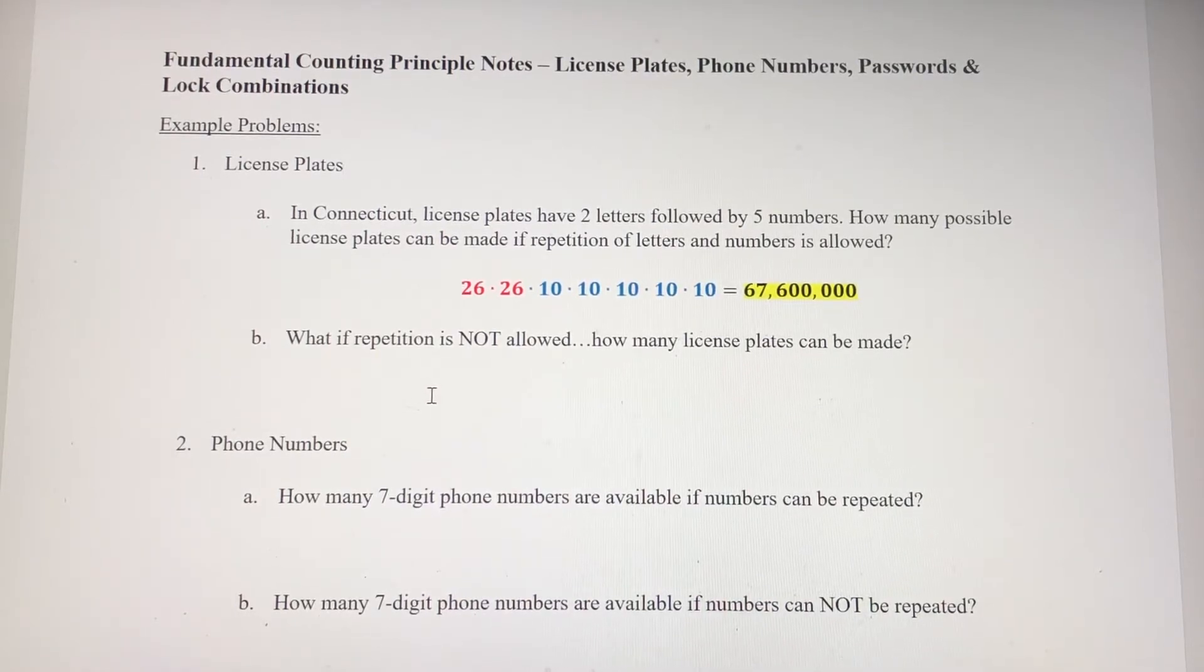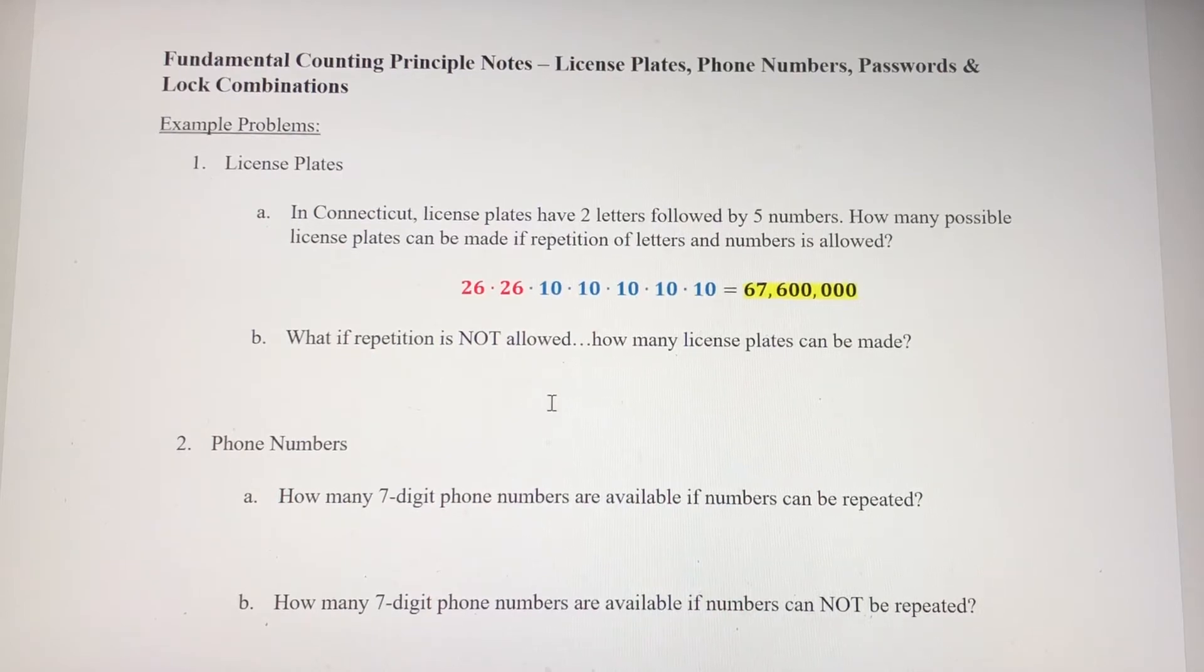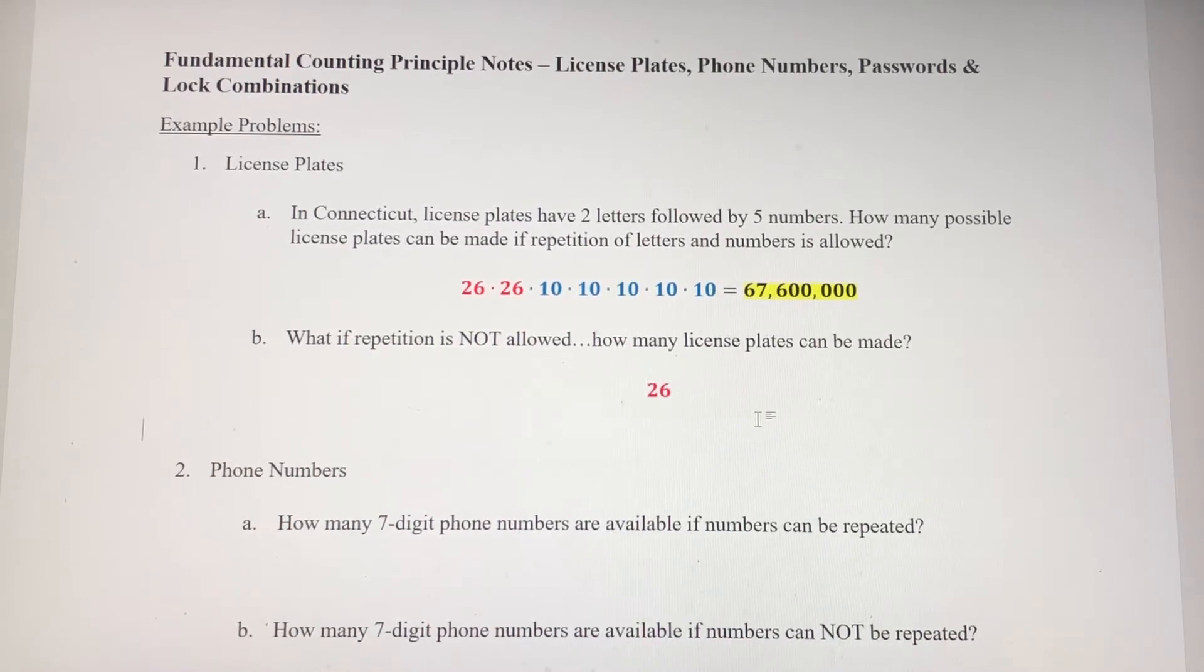Let's see what happens if we eliminate repetition though. The first letter still has 26 options. But let's just say we use the letter A in that first letter. Now A is gone, so we only have 25 options for the second spot. The first number, there's still 10 digits that are possible, but we're going to eliminate one digit with each step that we follow. So we've had ten options for the first number, then nine, eight, seven, and six.